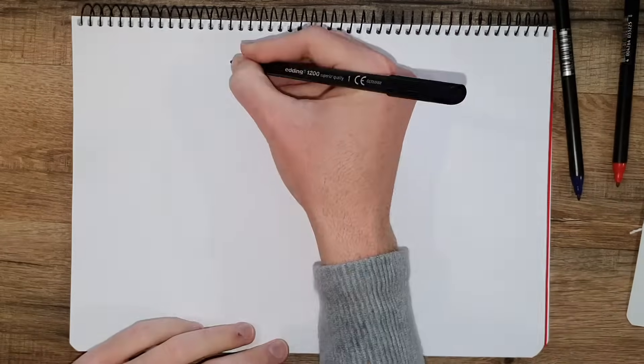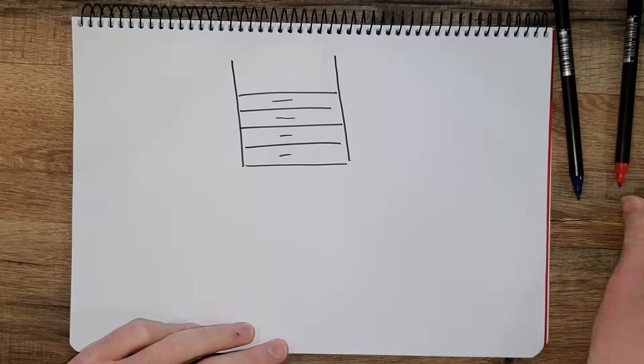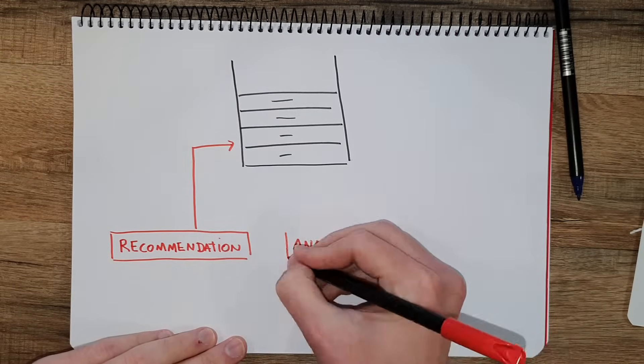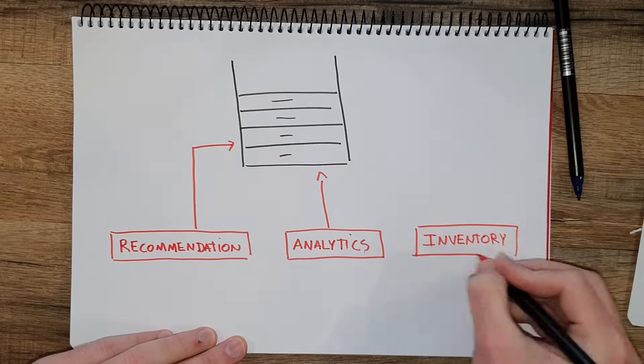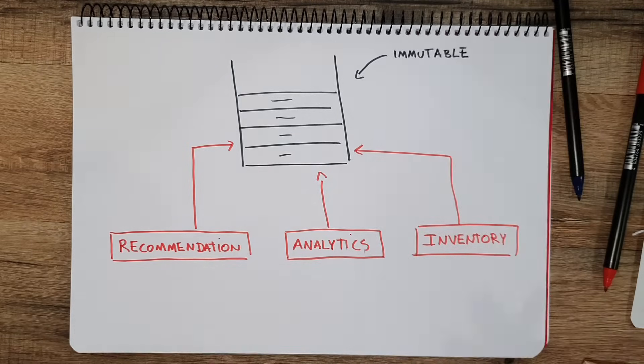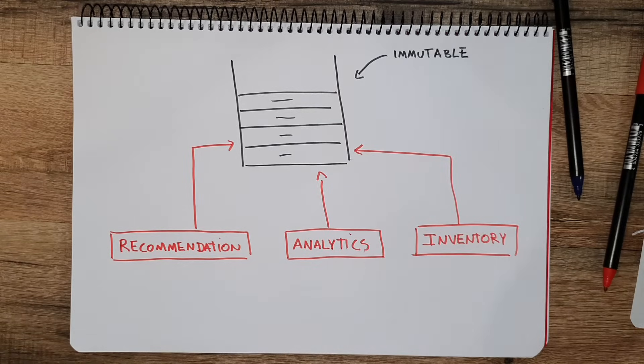Given that all the events are immutable and the event log itself is immutable, you can parallelize a lot of processing. For example, in our e-commerce site we have different services: recommendation, analytics, and inventory services. They can read from the event log and recreate their own state based on what is in it. You can see a lot of the benefits of parallel processing here — scalability, and having many more readers than writers.